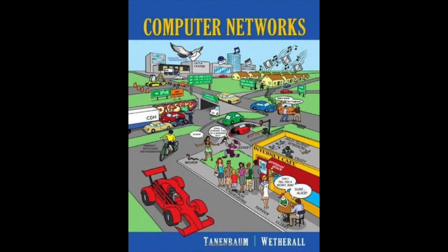Real networks are not error-free, but that is precisely the purpose of the transport layer—to provide a reliable service on top of an unreliable network. Consider two processes on a single machine connected by a Unix pipe. They assume the connection between them is 100% perfect and do not want to know about acknowledgements, lost packets, or congestion. The connection-oriented transport service is all about hiding the imperfections of the network service so that user processes can assume the existence of an error-free bit stream, even when they are on different machines.